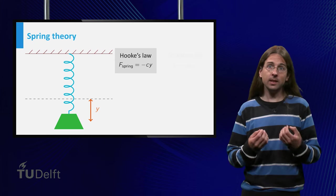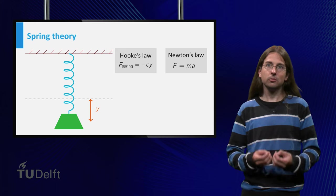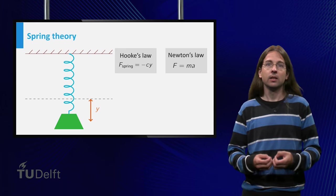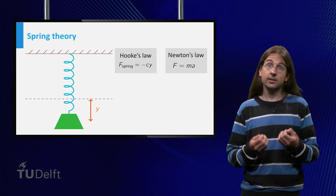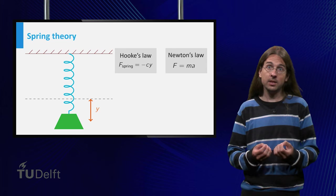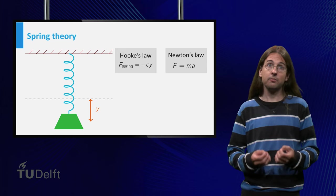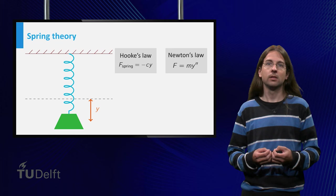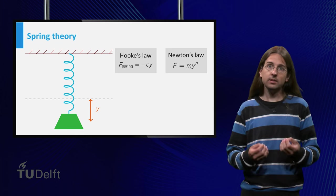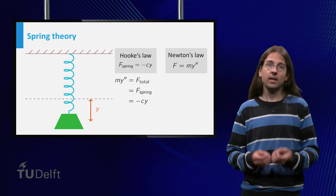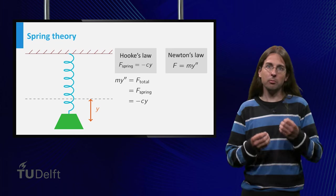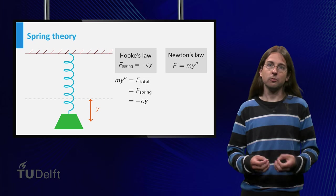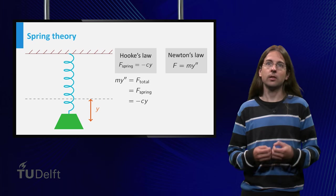Newton's second law of motion tells you that this force equals f equals m times a, where a is the acceleration, which is the second derivative y double prime of the displacement. Thus we obtain the differential equation m y double prime equals the total force equals minus c times y.